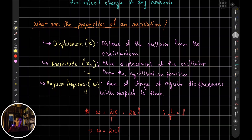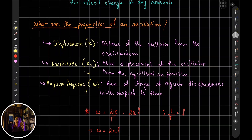Next is angular frequency, or omega. From circular motion, you already know angular velocity or angular speed — it is the rate of change of angular displacement. Angular frequency is the same thing. In the context of oscillation, it describes how frequently theta is changing, which is identical to the rate of change of angular displacement with respect to time.